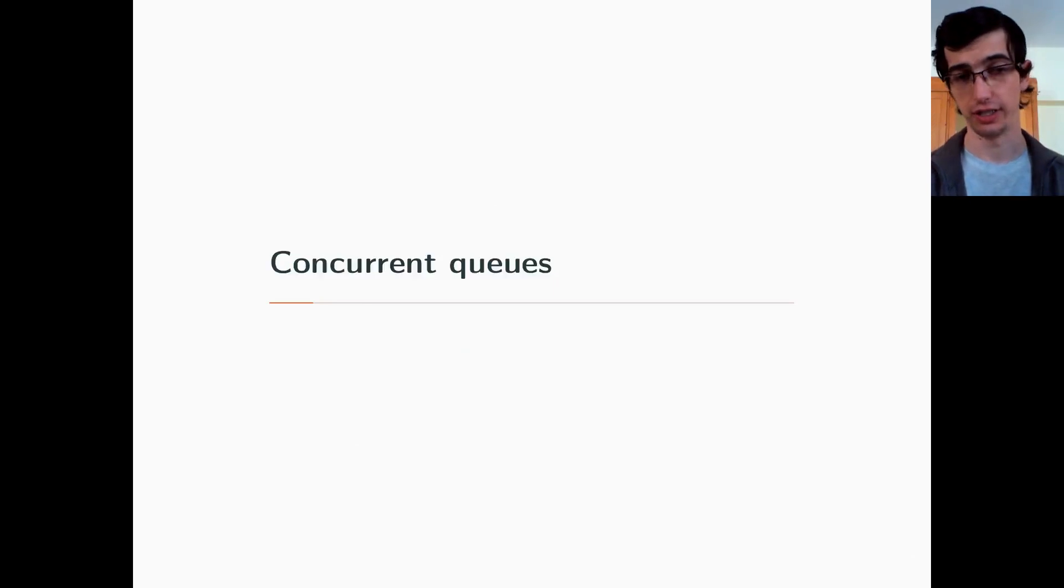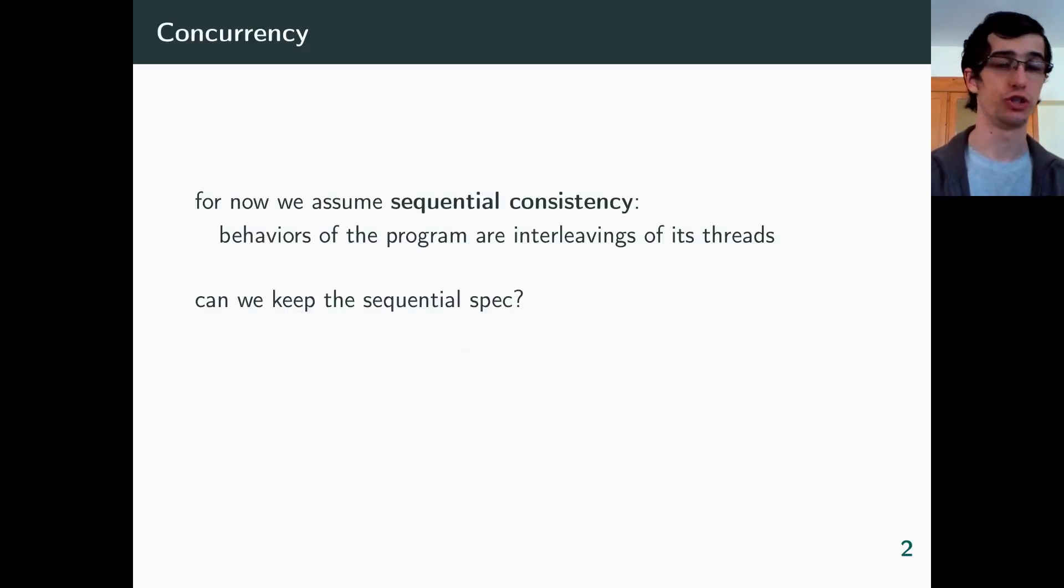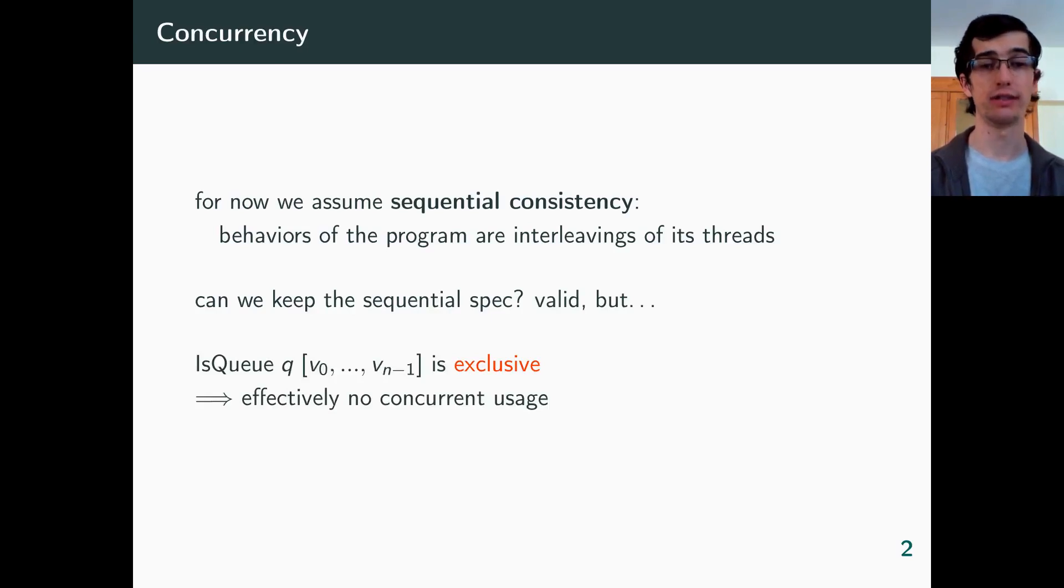Now let's enter concurrency. For now, let's assume sequential consistency, that is, a program always behaves as some interleaving of its threads. We want to specify a queue which can be used concurrently. Can we simply keep the spec that we just saw? Well, this spec is still valid, but to use it, a thread needs the unique ownership of the queue, so that effectively prevents concurrent uses. And it makes sense, because there is no reason to believe that the data structure is thread safe, unless we specify it.